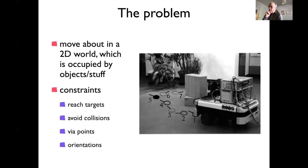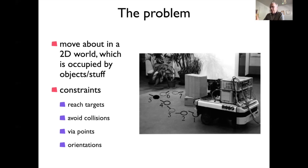We're talking about motion planning, path planning for vehicles in 2D, in the plane. It's a problem in the sense that there is some structure in the world, so motion planning really means constraint satisfaction. You want to reach a target, you want to avoid collisions, and sometimes you might have other constraints — like staying on the road, or going through a sequence of steps to deliver someone or pick up something.